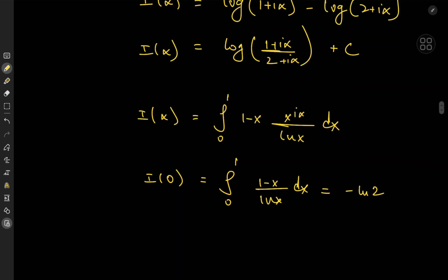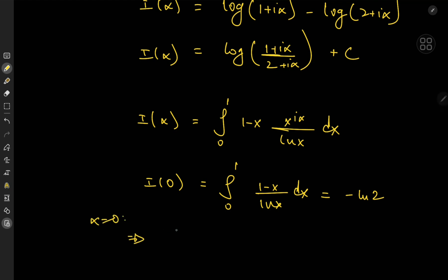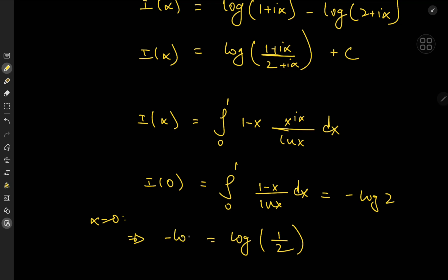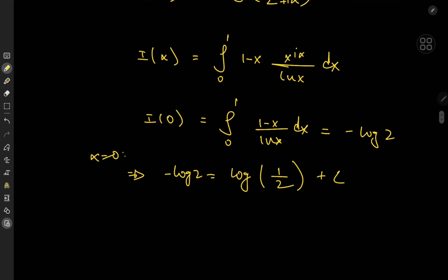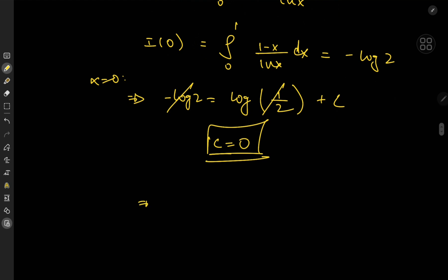Plugging alpha equal to 0 into our equation gives negative log 2 equal to log(1 over 2). Since 1/2 is a real number, this is just the natural logarithm, the same as the logarithm on the right-hand side — written properly as negative log 2, plus a constant C. Since log(1/2) and negative log 2 are the same thing, C equals 0. Finally, we have I(alpha) equal to log of (1 plus i alpha) divided by (2 plus i alpha).